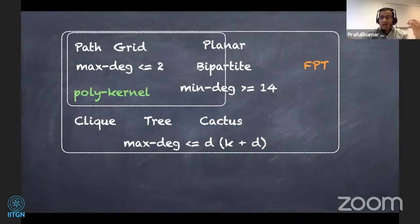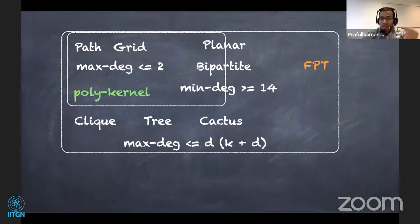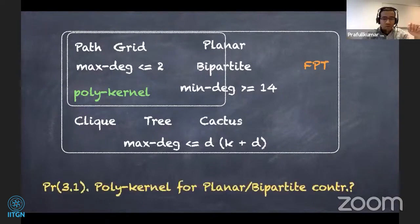We know there is a polynomial kernel for path contraction, grid contraction, and when the target graph has maximum degree at most two. We know for a fact that clique contraction, tree contraction, cactus contraction, and max-degree-at-most-t contraction do not admit a polynomial kernel unless NP is contained in coNP/poly. For the three problems on the borderline, the status is not known.